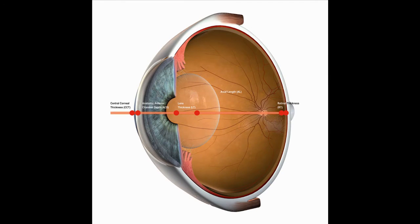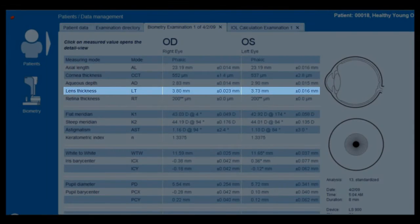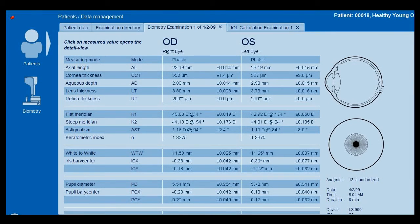The measurement range for lens thickness is 0.5 millimeters to 6.5 millimeters. The individual lens thickness measurements are displayed on the results overview page.